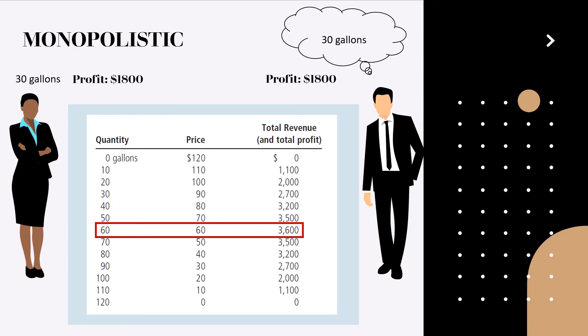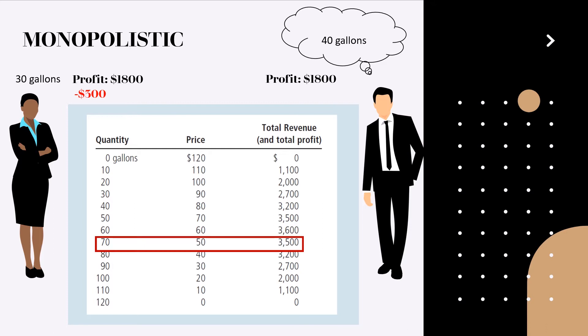1,800 dollars per each. However, after long deliberations, Jack considers what will happen if he produces 40 gallons. In this case total production goes to 70 gallons and the price drops to 50 dollars per gallon. Ann will lose 300 dollars if she does not change her production volume, however Jack will earn an additional 200 dollars. So this is a beneficial move for Jack.